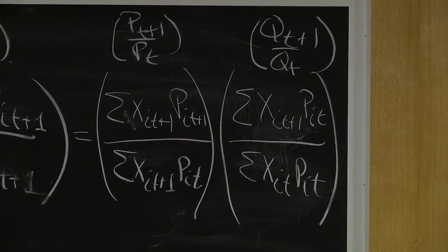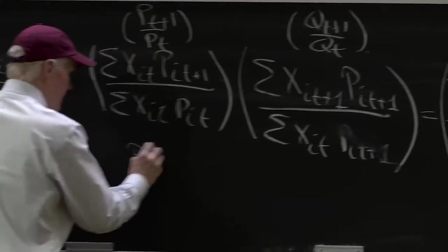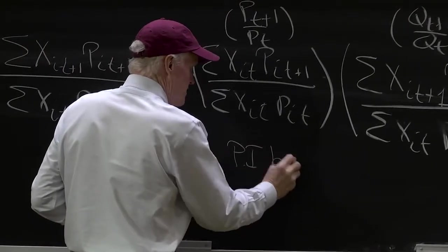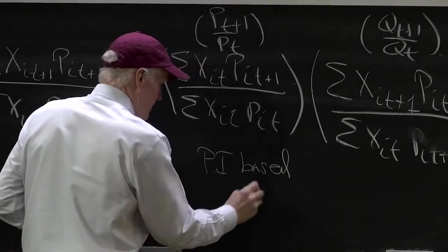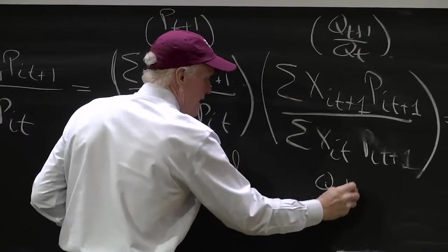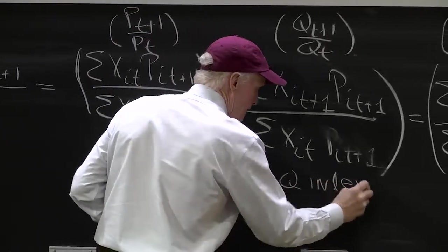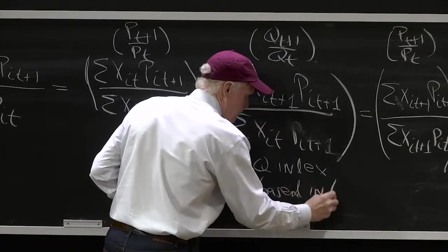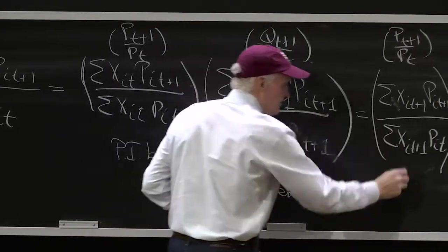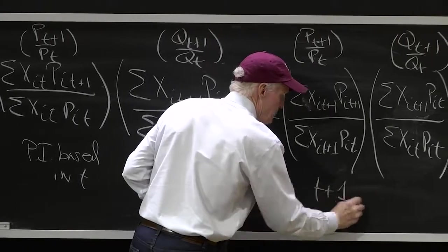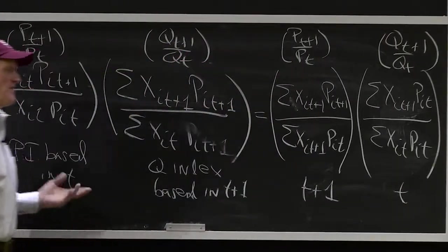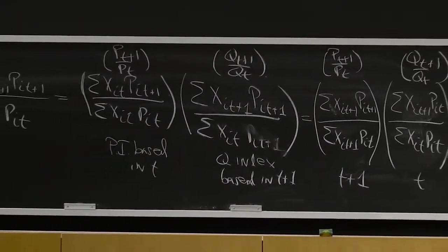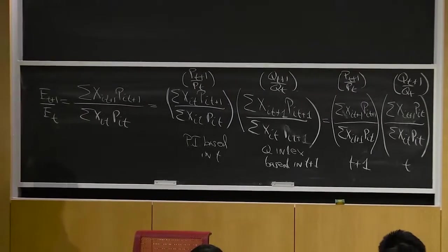So I would have ended up with a quantity index that's based in period t. So here, price index based in t, quantity index based in t plus 1. Here, this is t plus 1 base, and here it's t. And there's none of them. It's not like one of these is good and one of them is bad. They're just different. They're two alternatives. They're both approximations.